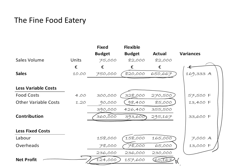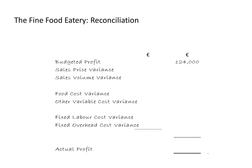So I'm just going to set up a very simple reconciliation. I'm going to start off with the original budgeted profit, list all my variances, and I should end up with the actual profit. I'm going to group my variances: sales price variance alongside the sales volume variance, then the two variable cost variances together, and the two fixed cost variances together. The original budgeted profit is €124,000. If a variance is adverse, it's detrimental to profit so I treat it as a minus figure; if it's favourable, it boosts profit so I treat it as a plus figure.